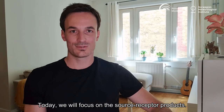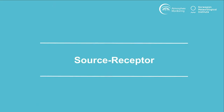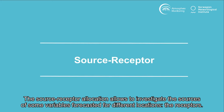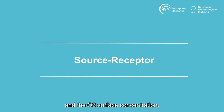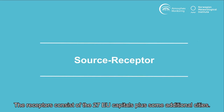Today we will focus on the source receptor products. The source receptor allocation allows us to investigate the sources of some variables forecasted for different locations, the receptors. In our case the variables are PM10, PM2.5, which correspond to the mass of the particles with diameter below 10 and 2.5 micrometers respectively, and the ozone surface concentration. The receptors consist of the 27 EU capitals plus some additional cities.